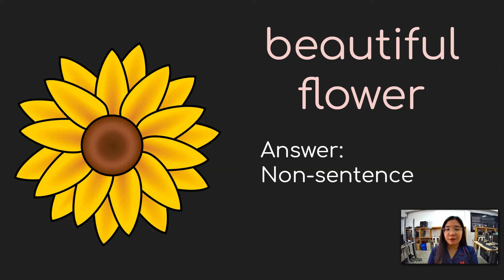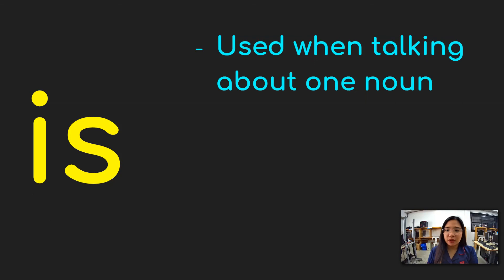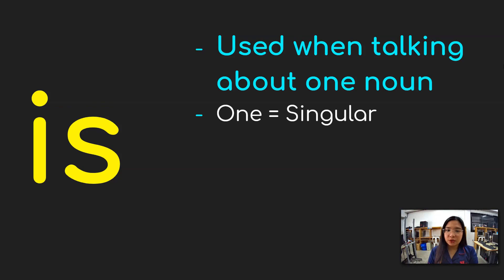Okay, let us now go to our topic for today, which is all about "is" and "are." Let us start our discussion with the word "is." We use "is" whenever we talk about one noun, and when we say one, you are going to use the word singular. Whenever we have a singular noun or one noun, we are going to use the word "is."